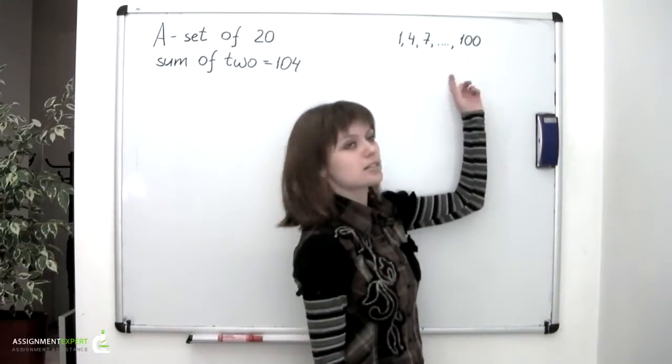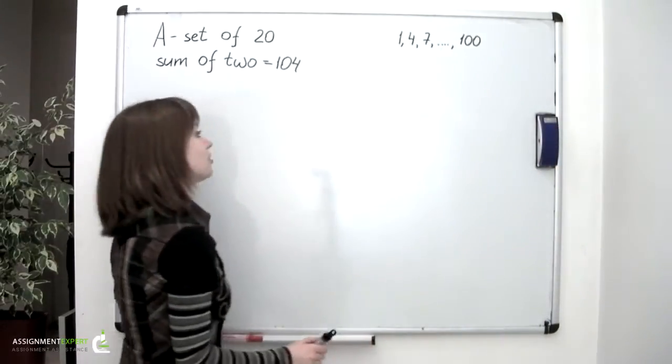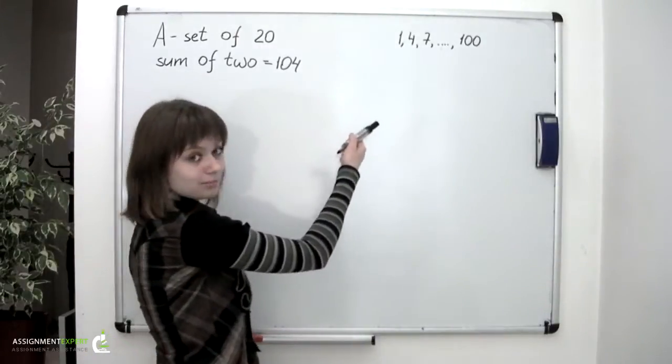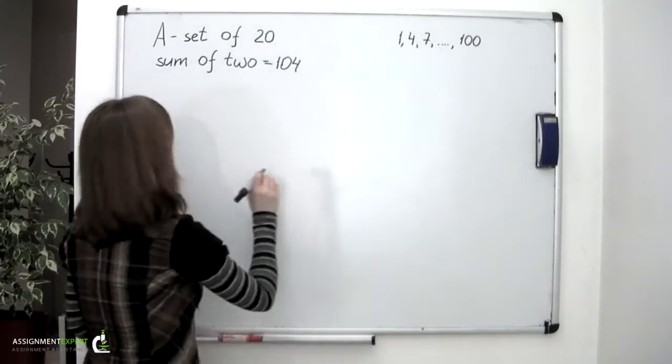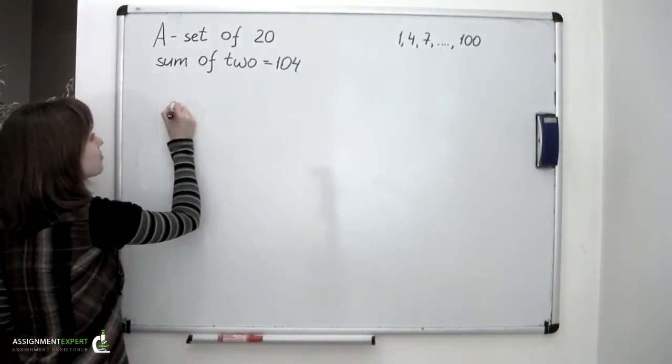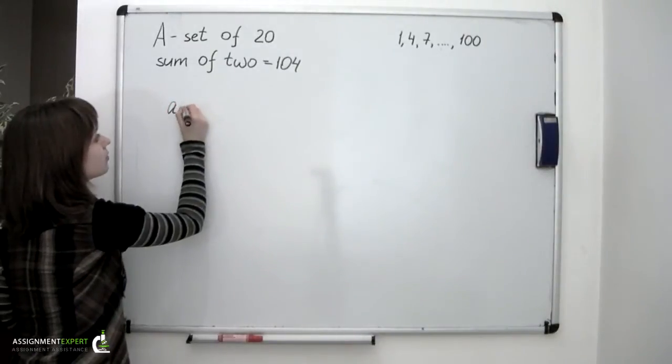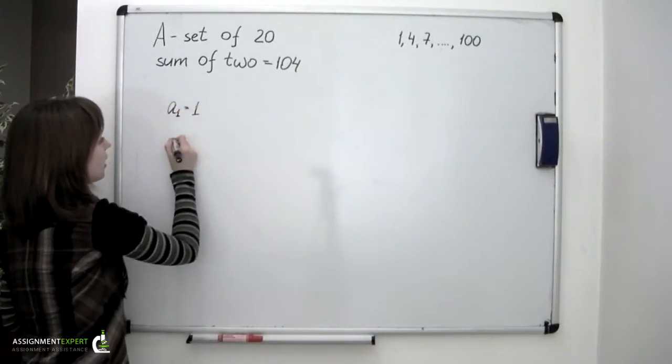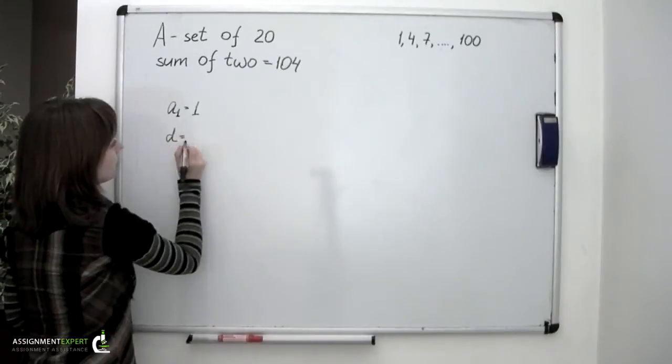Let's take a look at this sequence. We know it's an arithmetic progression, and it looks like this. So we can say at once that its first term, A sub 1, equals 1, and its difference equals 3.